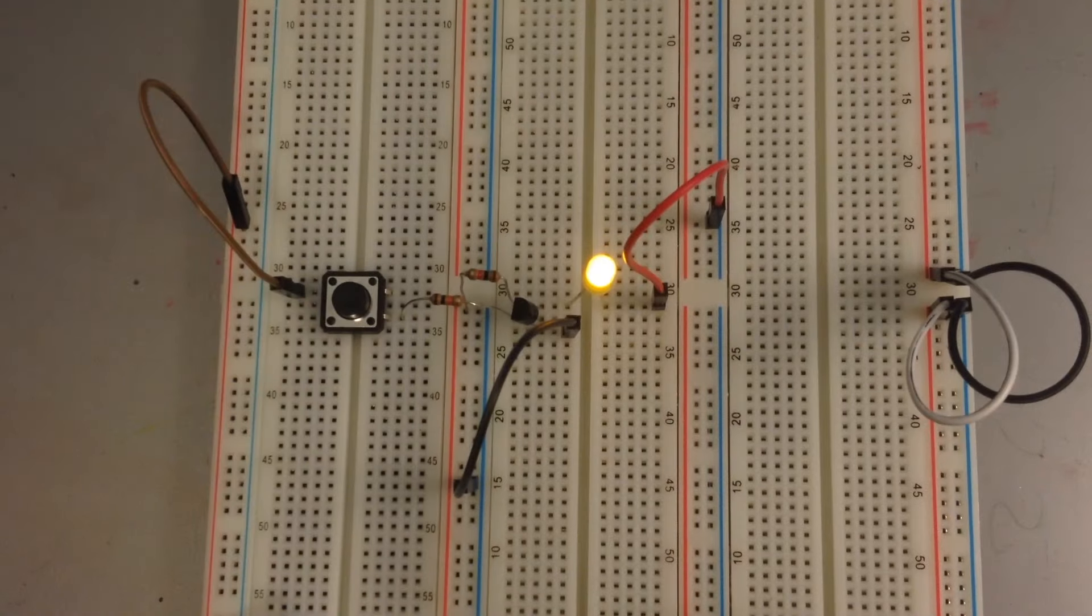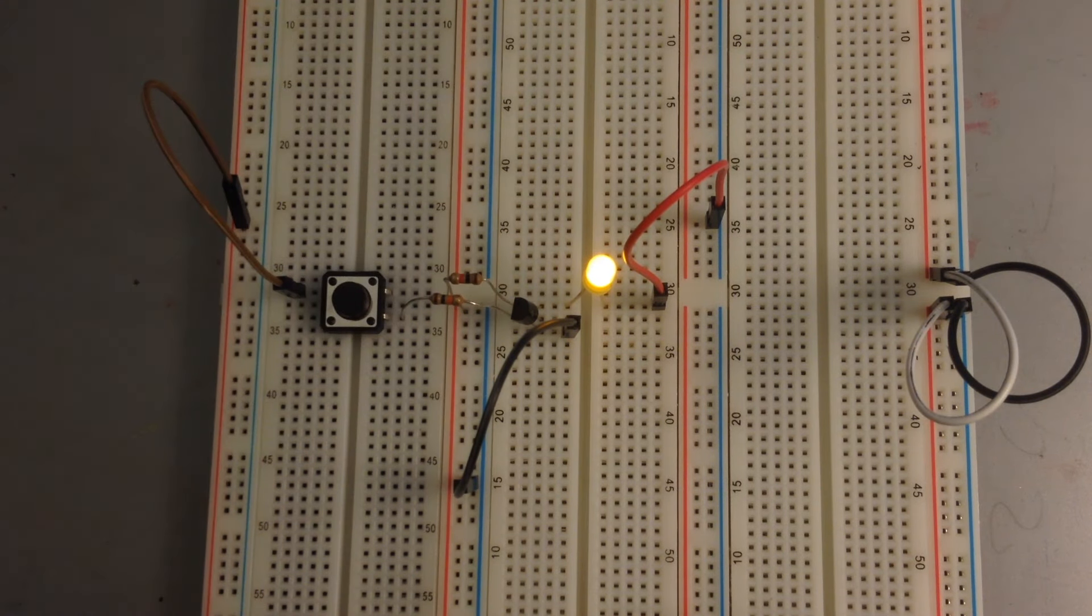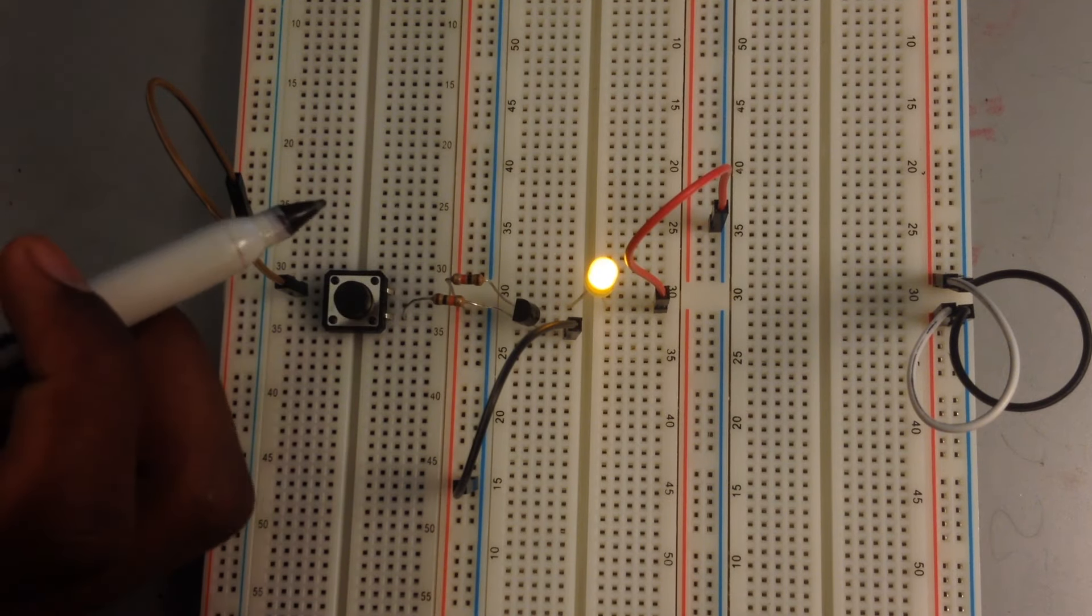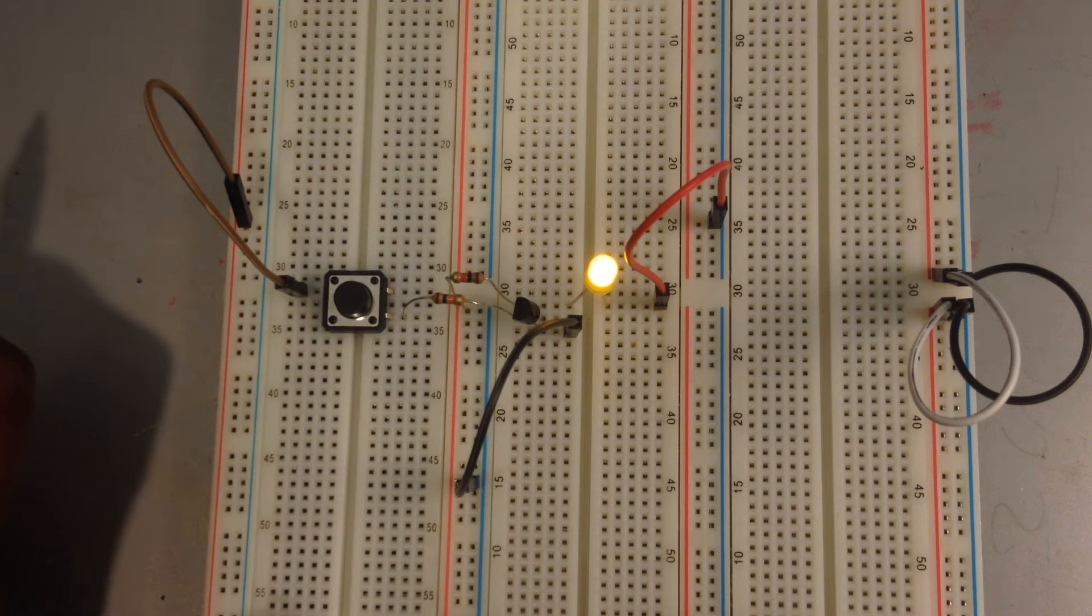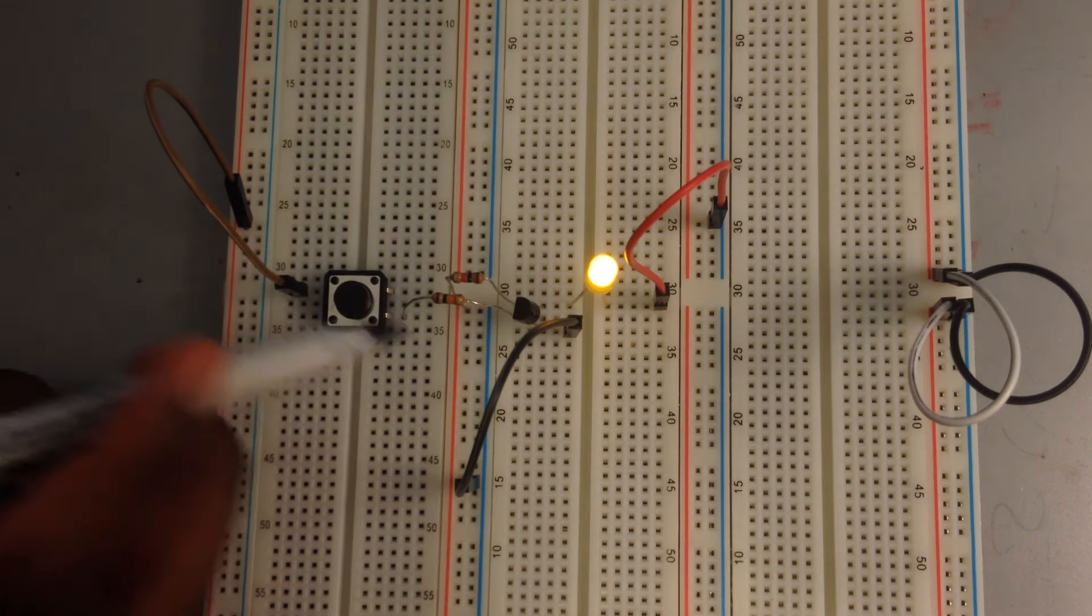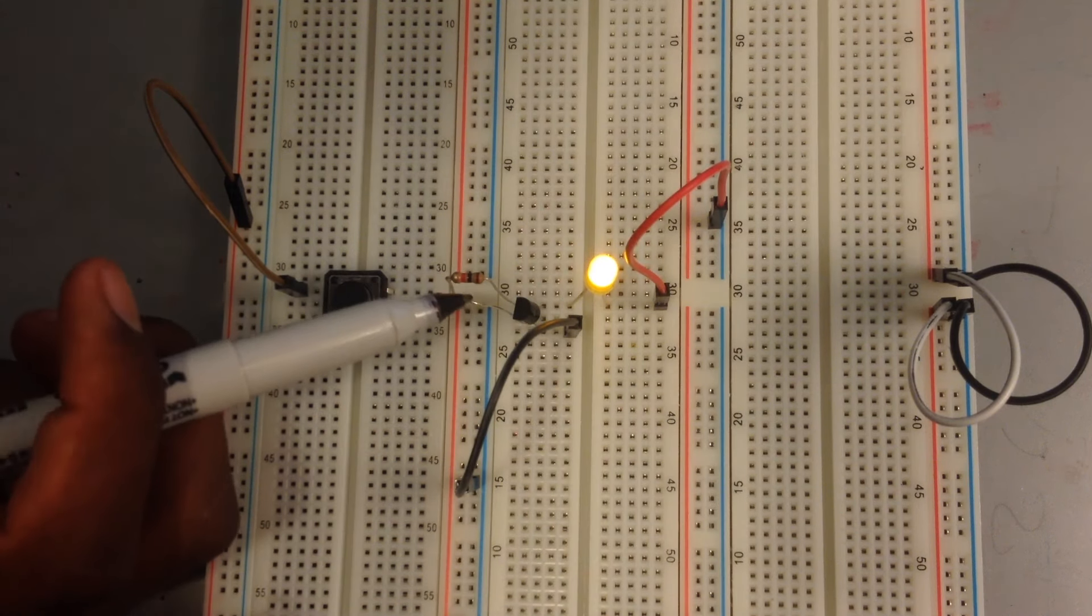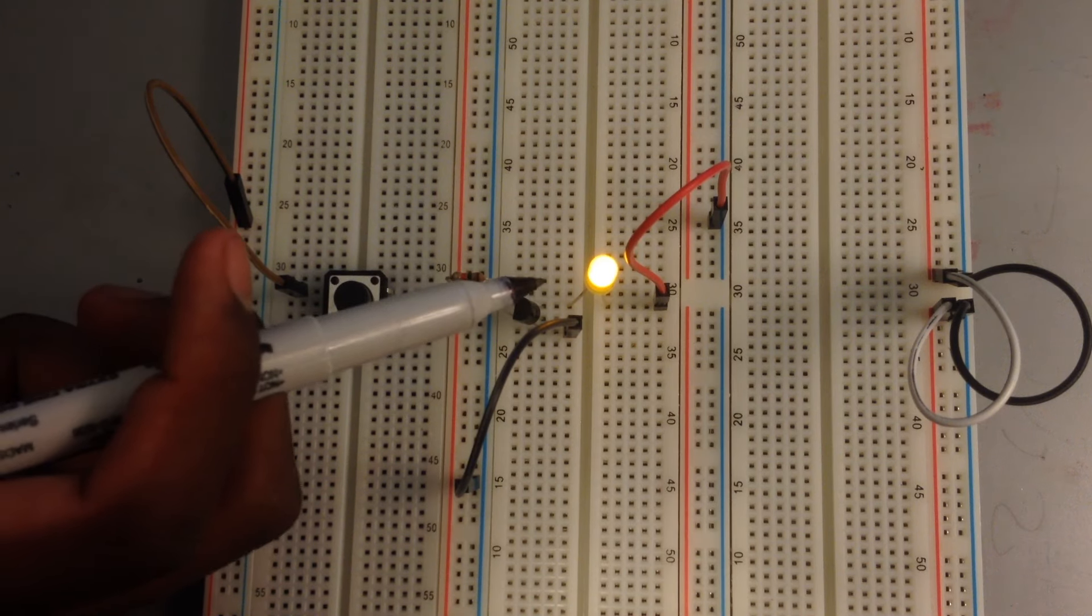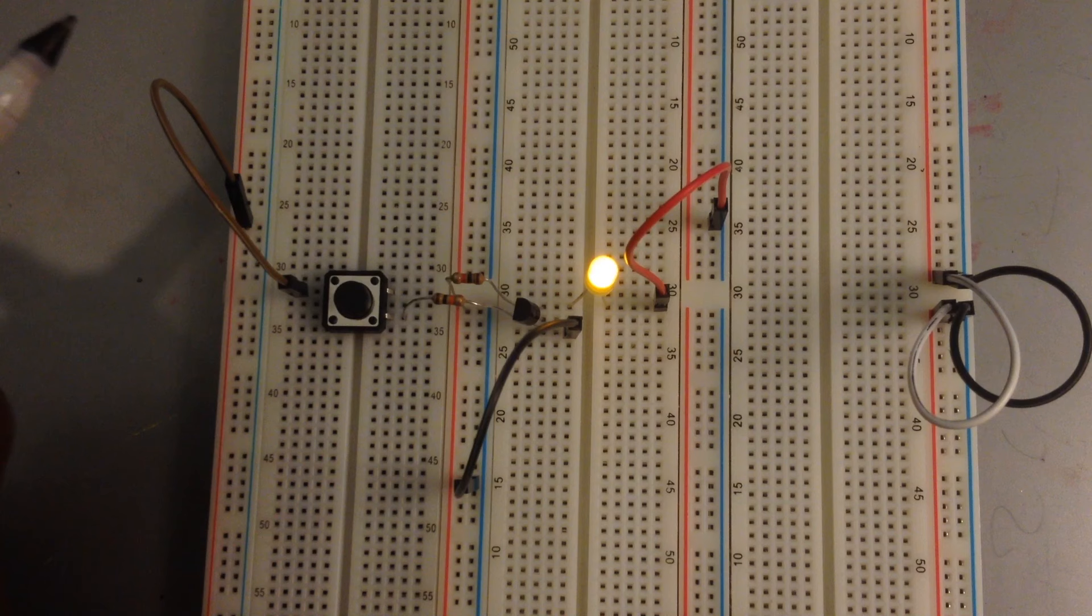Now, we have our 1K resistor here. That's brown, black, red. That's our 1K resistor. The 1K resistor is connected to this red line here, which is our VCC, and that's connected to the collector of the transistor, and that's connected in parallel to the LED, which is going to ground, which is why the LED is on now.